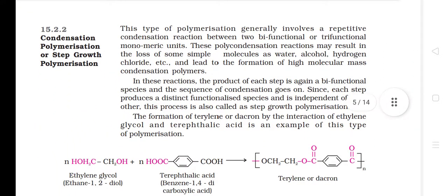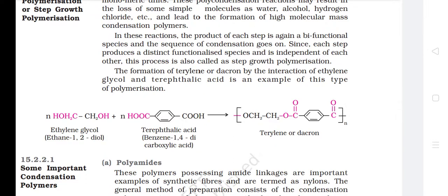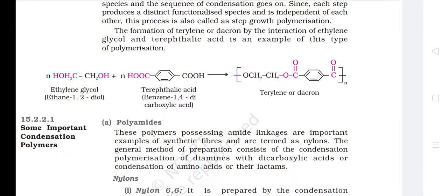15.2.2 Condensation Polymerization or Step Growth Polymerization. This type of polymerization generally involves a repetitive condensation reaction between two bifunctional or trifunctional monomeric units. These polycondensation reactions may result in the loss of simple molecules such as water, alcohol, hydrogen chloride, etc., and lead to the formation of high molecular mass condensation polymers. In these reactions, the product of each step is again a bifunctional species and the sequence of condensation continues — since each step produces a distinct functionalized species independently, this process is also called step growth polymerization. The formation of terylene or dacron by the interaction of ethylene glycol and terephthalic acid is an example of this type.